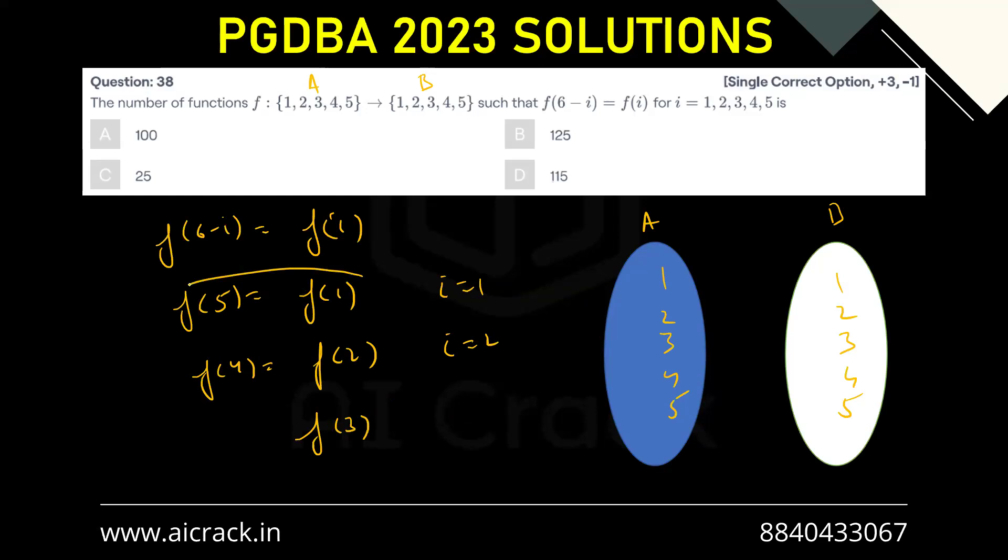Now we have 3 units. This is unit 1, this is unit 2, and this is unit 3. So let's rewrite set A in a different form. Let's take 5 and 1 together, 4 and 2 together, and 3 individually.